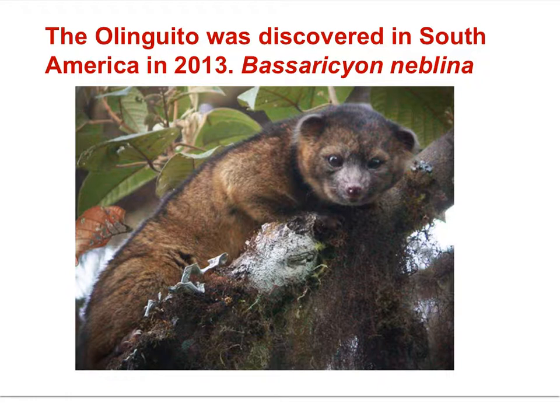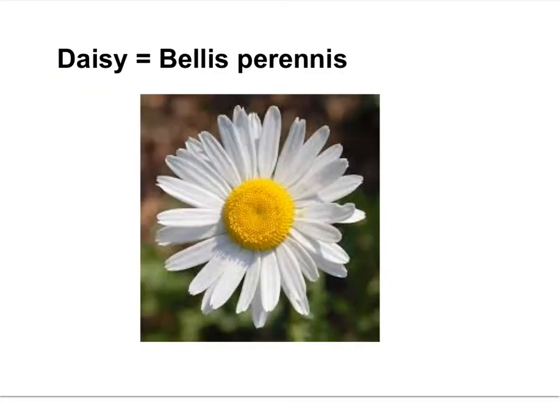Each species has only one scientific name in the binomial system, so there is no confusion when referring to Basariscion nablina. There are many flowers people might refer to as the daisy, but this flower, also known as the common daisy, has the scientific name Bellis perennis. The binomial naming system provides specificity about the species.